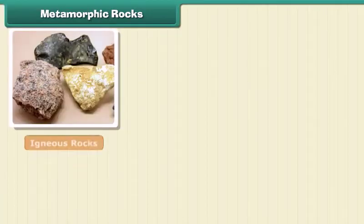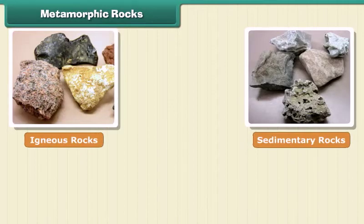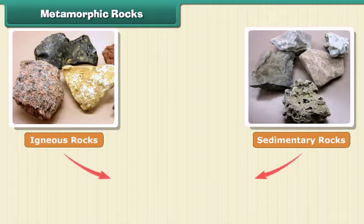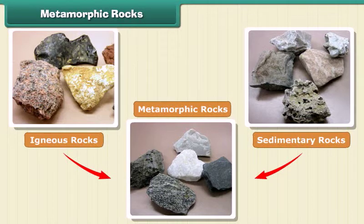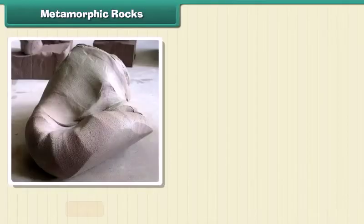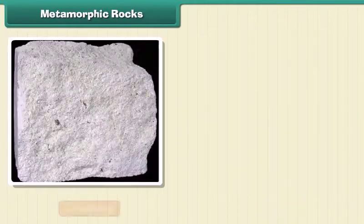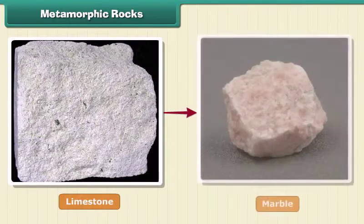The third type of rock is made out of the first two types. These are metamorphic, or changed, rocks. Igneous and sedimentary rocks can change into metamorphic rocks under great heat and pressure. For example, clay changes into slate and limestone into marble.